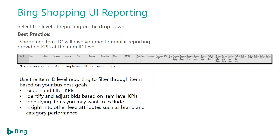When it comes to UI reporting, the best practice I highly recommend is using item-level ID reporting. Item ID reporting is the most granular, giving you line-item detail. You can see column headers for this dimension report — if you have UET conversion tags, you can look at conversions, conversion rate, and CPA. You can also look at average CPC, CTRs, and clicks for every item that's live from your product feed. You can filter through items based on your business goals and export the filtered KPIs.